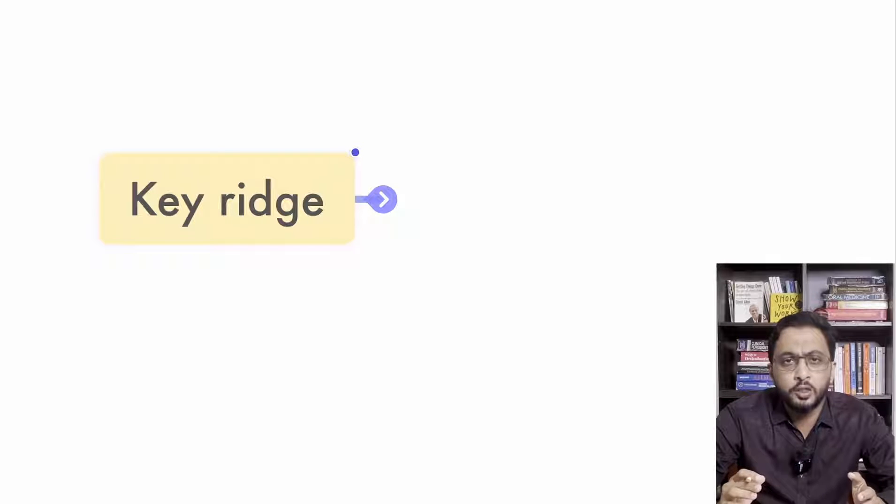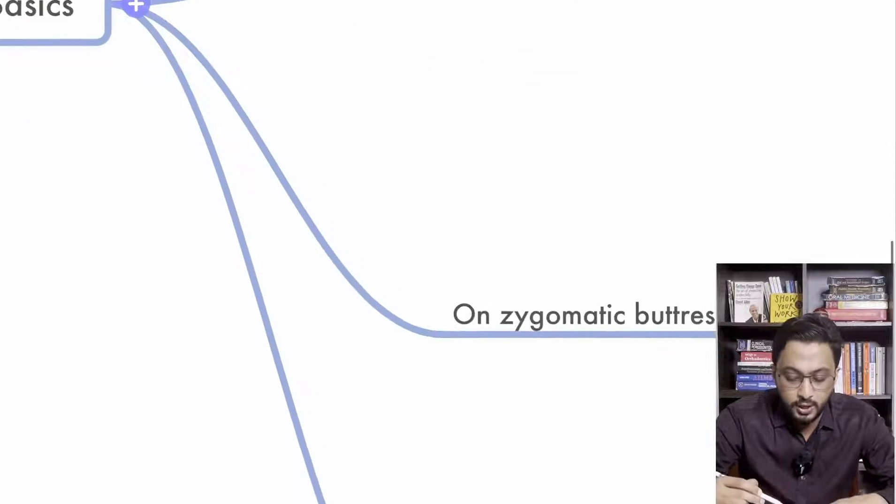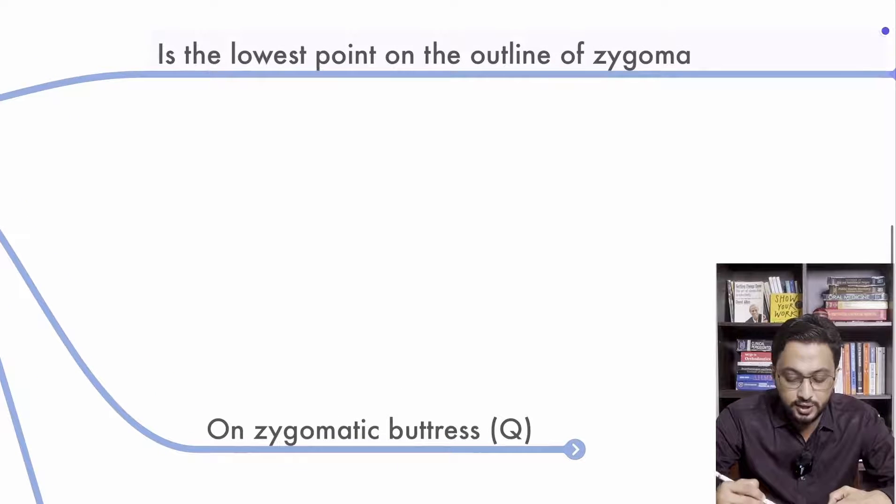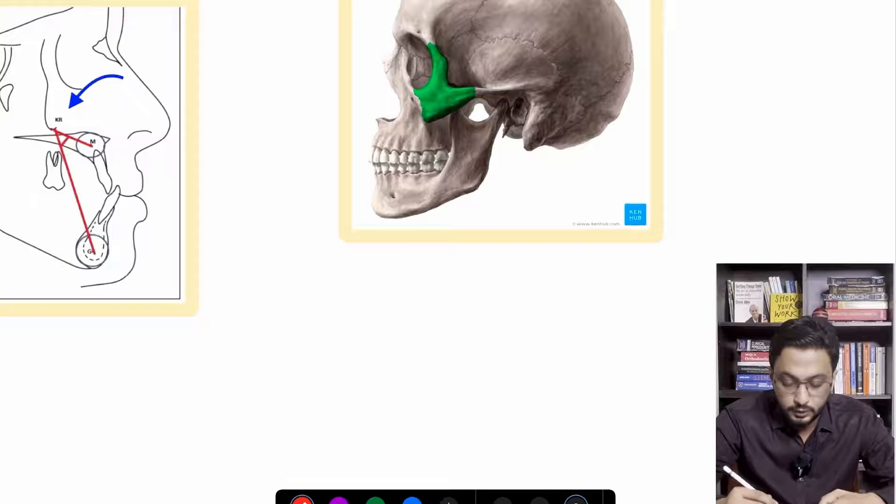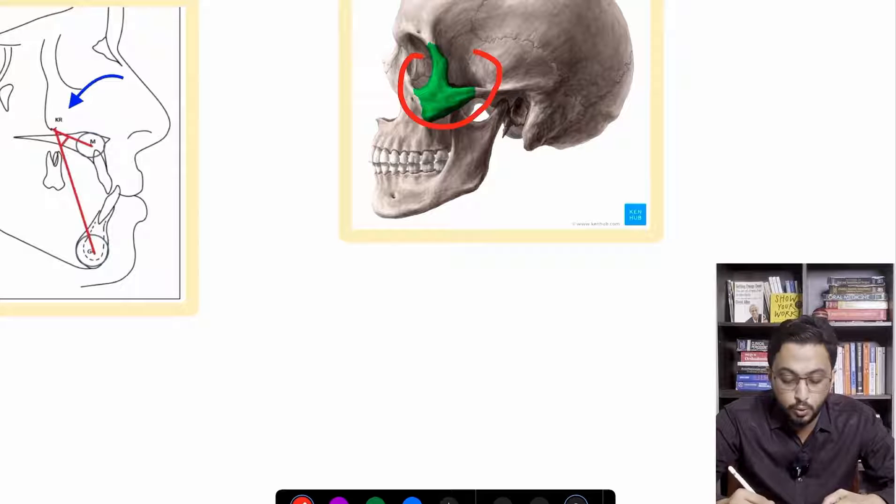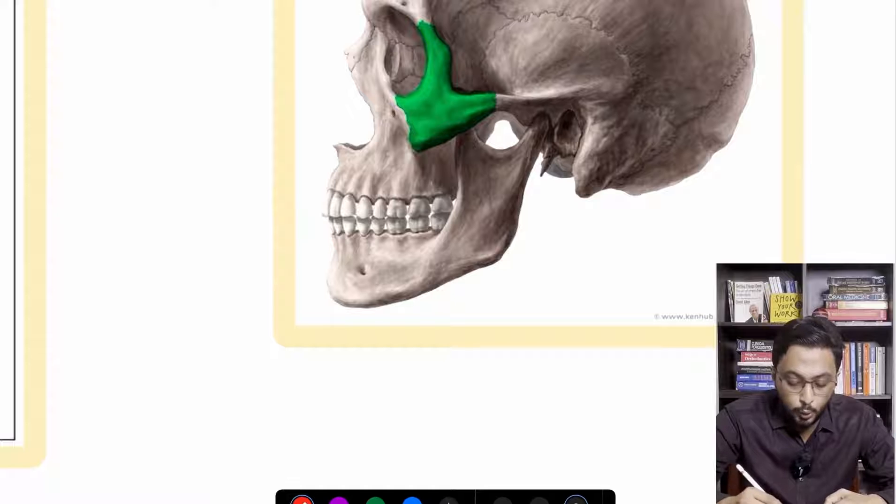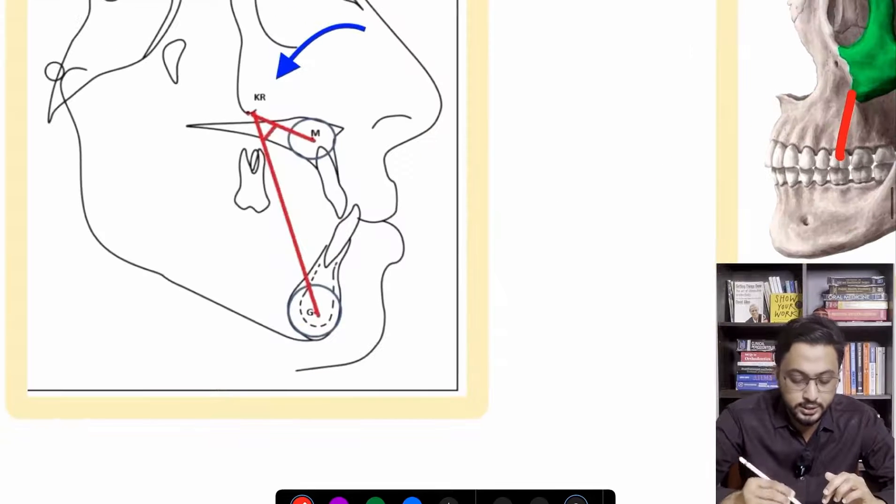Today we will be discussing Orthodontic Key Ridge. Basically, it is the lowest point on the outline of Zygoma. This green bone you can see here, that is the Zygoma,